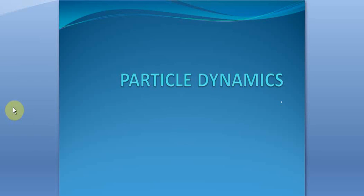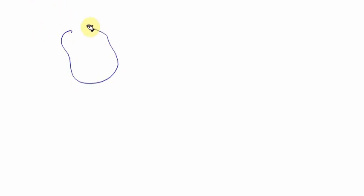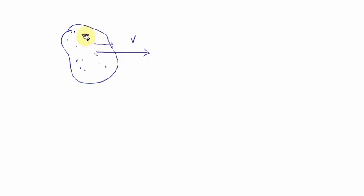We will start the chapter Particle Dynamics. Suppose there is an object moving with some velocity v. All its particles, with which the object is made up of, will move with the same velocity. This is necessary so as to maintain the shape and size of the object.